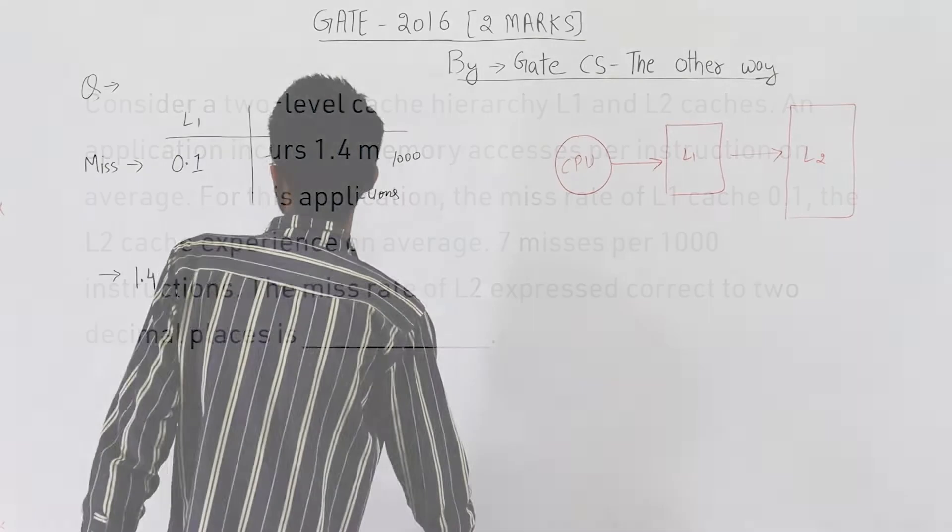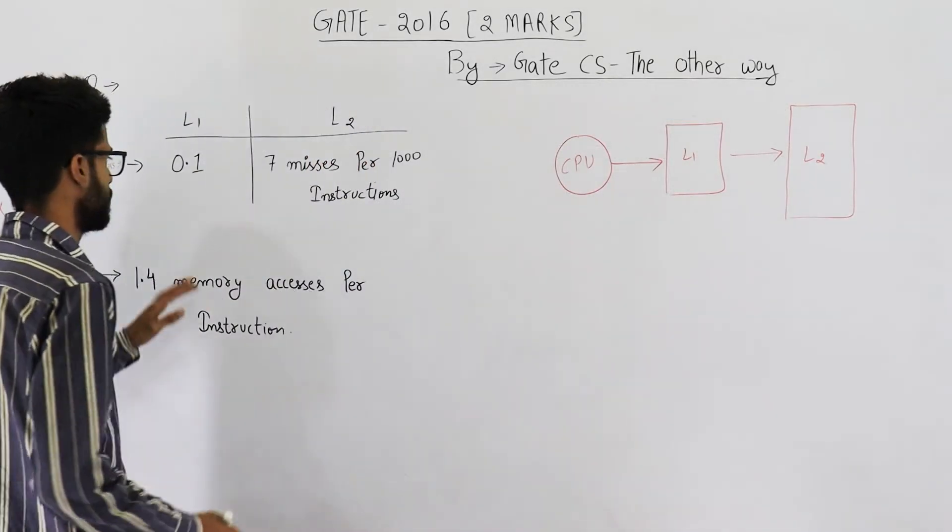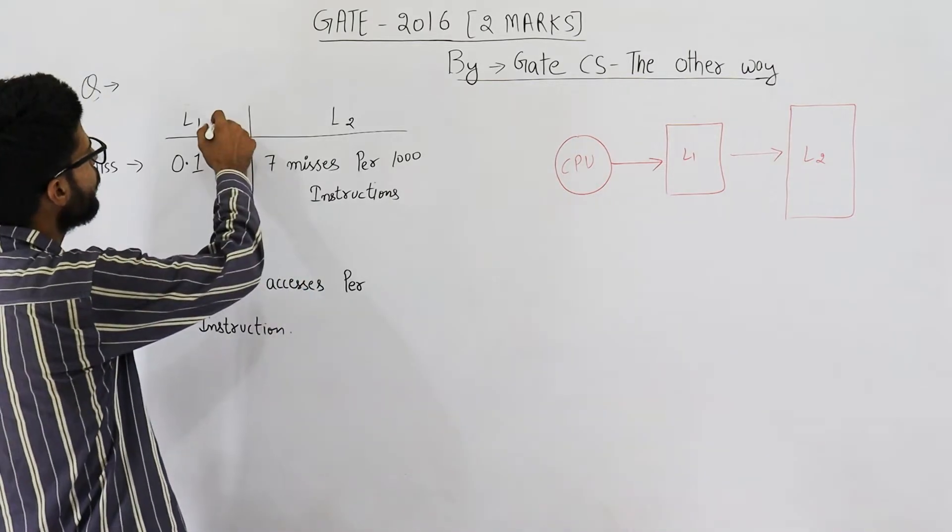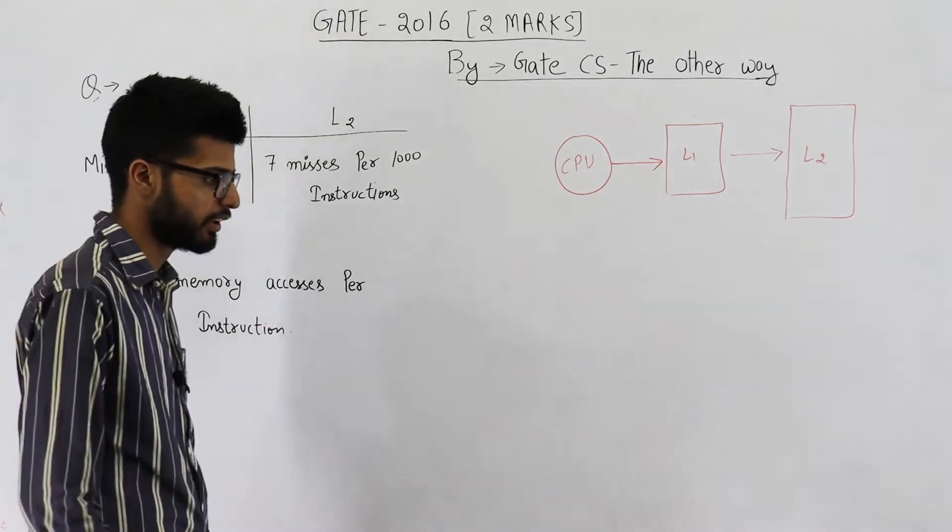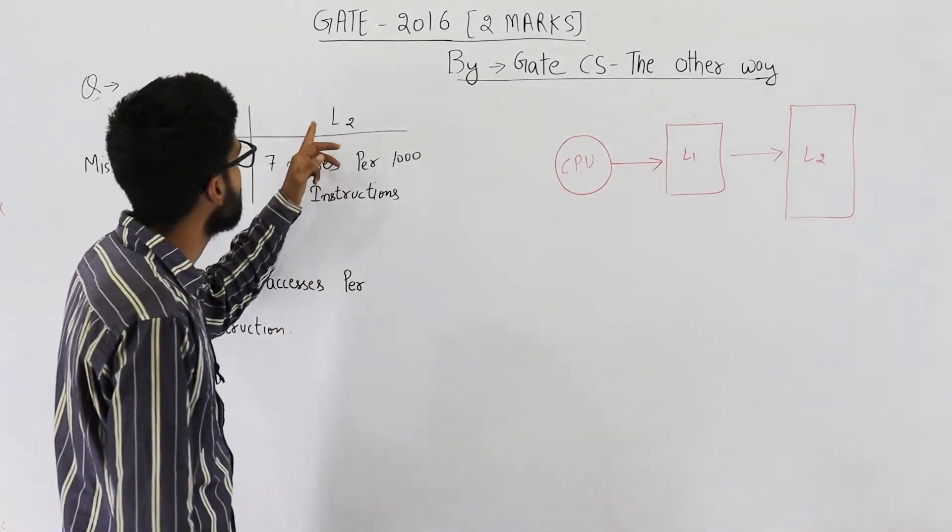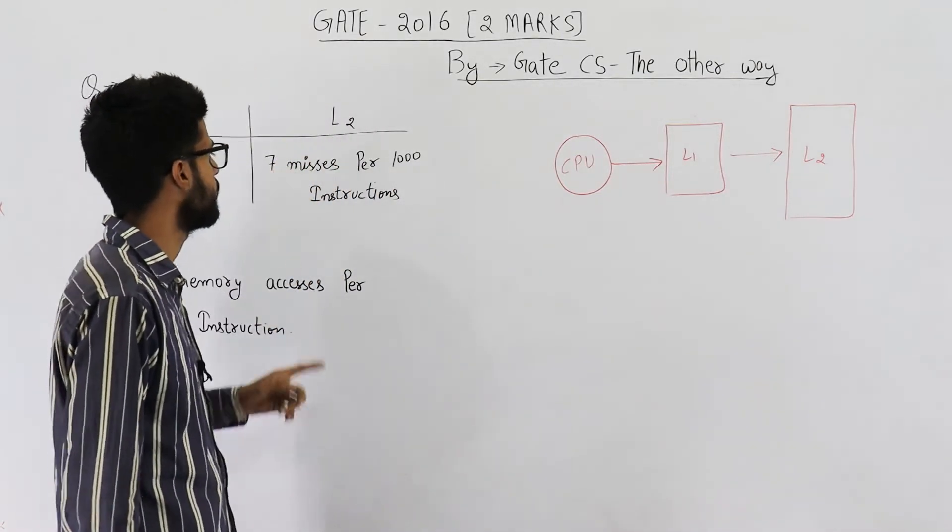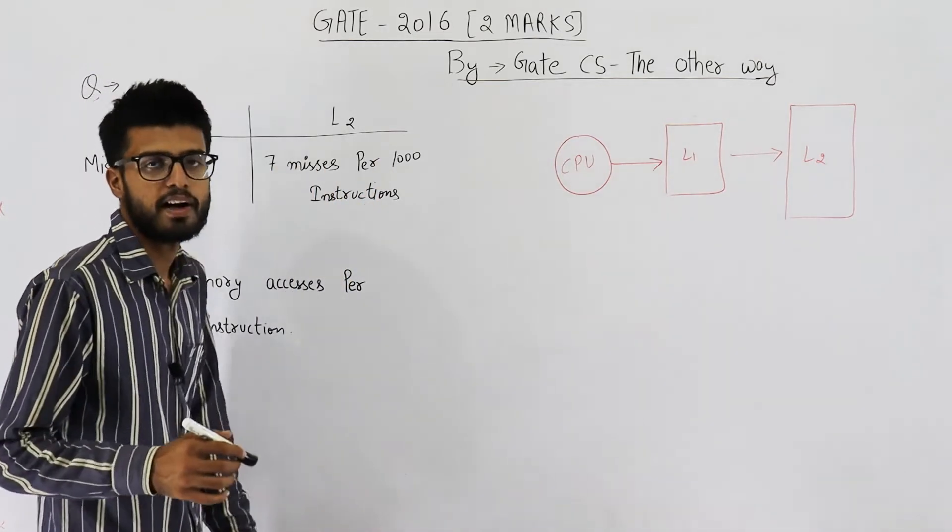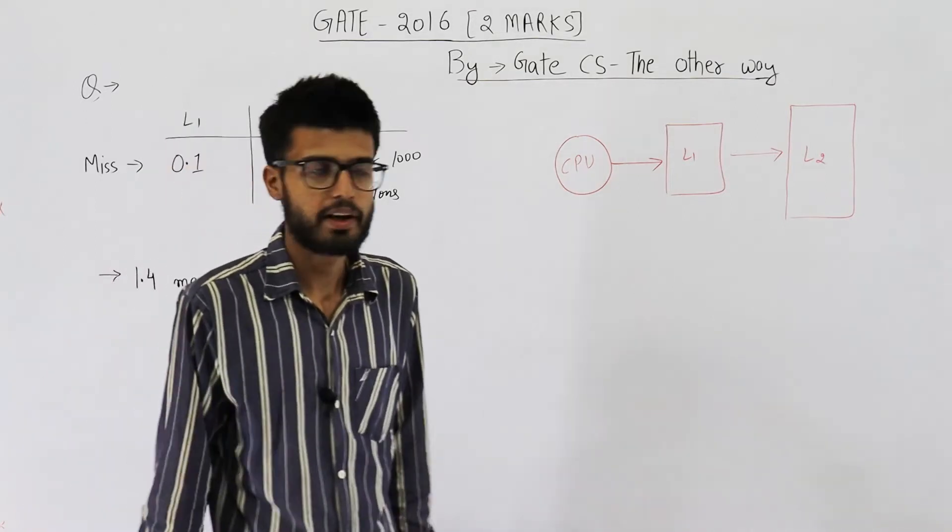So you are given this information. There is a two-level cache system where miss rate of level 1 cache is 0.1 and miss rate of level 2 cache is given indirectly. They are saying it faces 7 misses per thousand instructions. Find miss rate of level 2 cache.